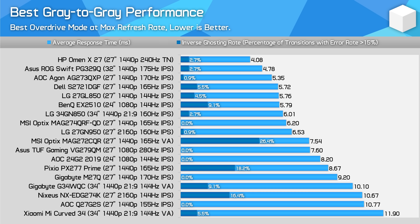Here's a quick look through our updated comparison charts for 2021 using a section of the monitors we've retested. The first chart is best grey-to-grey performance, measured at the display's maximum refresh rate using the best overdrive mode at that refresh rate. Results have increased in terms of raw numbers, however the general order hasn't changed too much. Higher-end IPS panels like the Dell S2721DGF and ASUS ROG Swift PG329Q remain at the top, along with TN panels like the HP Omen X27, while lower down we have more entry-level options like the Pixio PX277 Prime and VA monitors like the Gigabyte G34WQC.